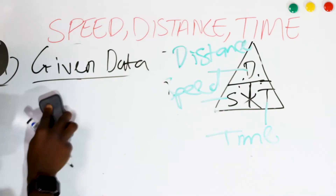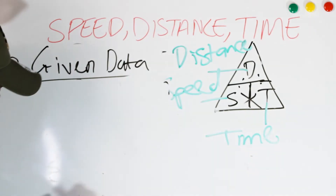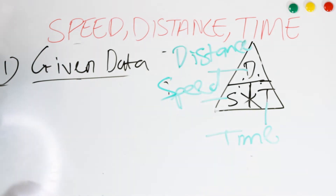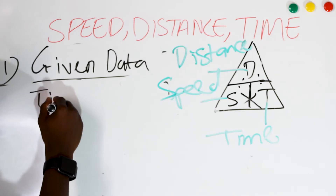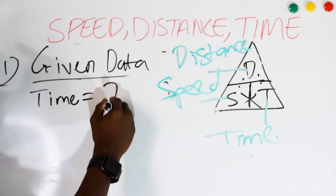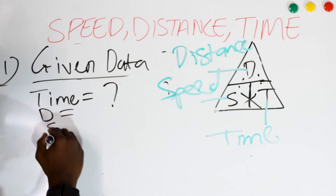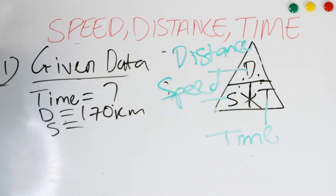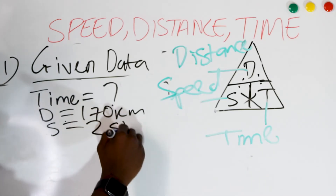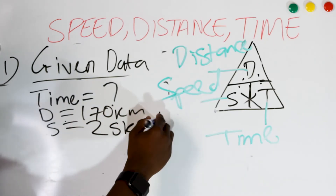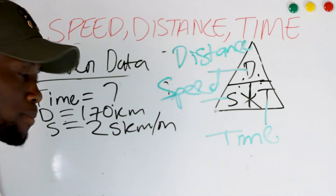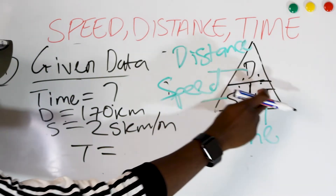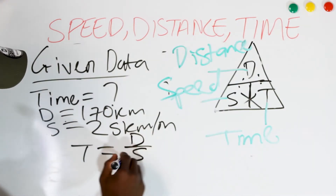Now let's calculate time. Time is unknown. The distance is 170 kilometers and the speed is 25 kilometers per minute. The formula is time equals distance over speed.